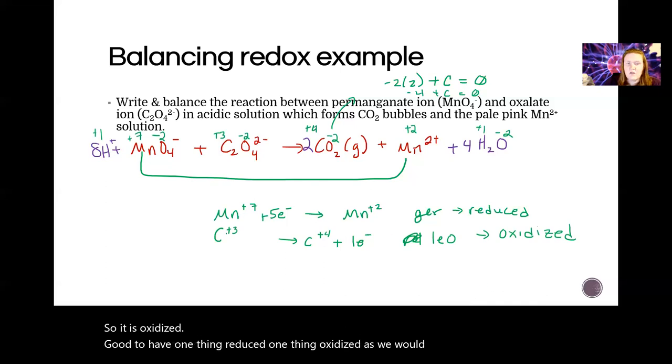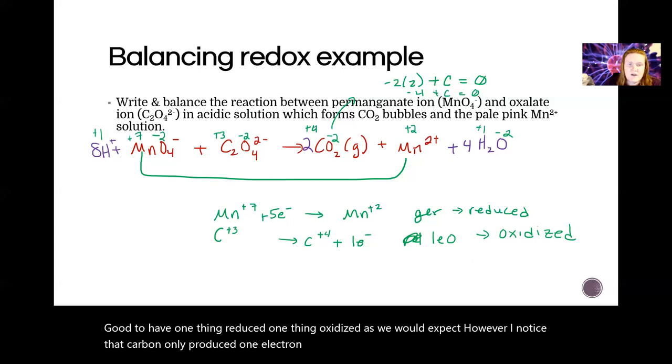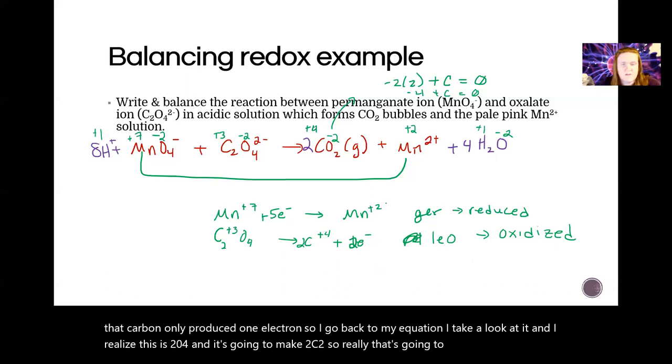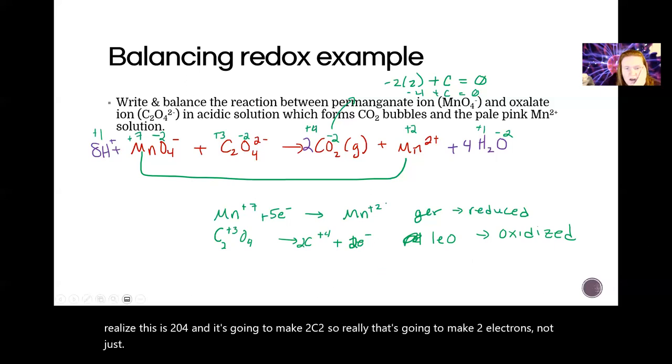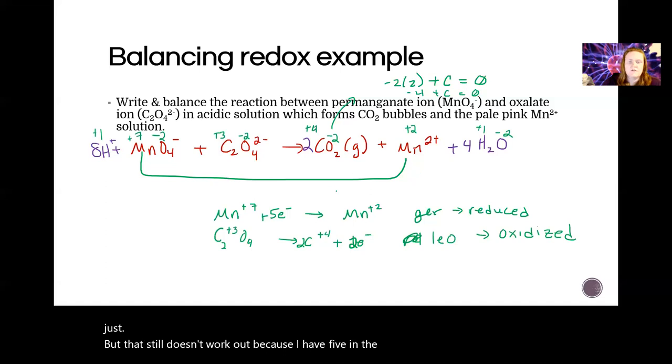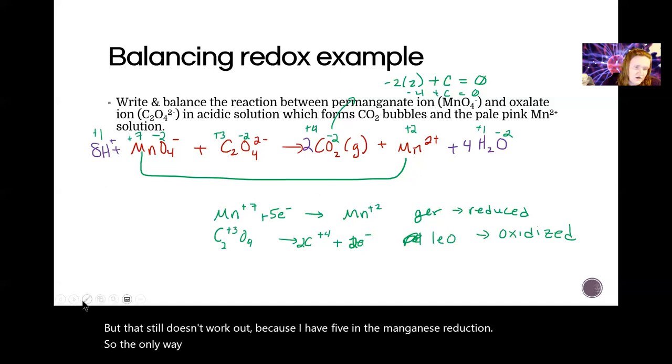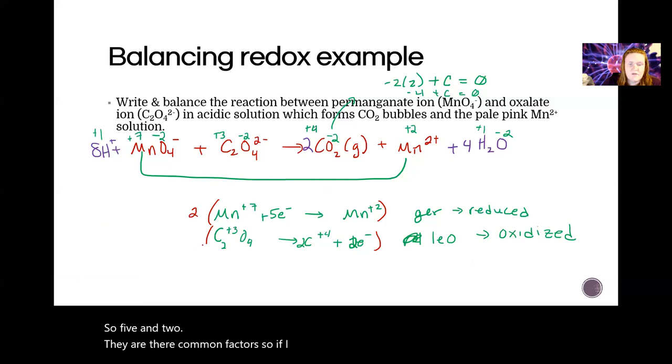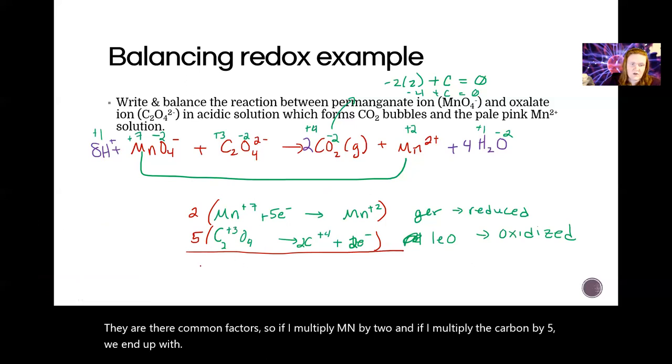So I go back to my equation, I take a look at it, and I realized, oh, this is actually C2O4, and it's going to make two CO2, so really that's going to make two electrons, not just one. But that still doesn't work out because I have five in the manganese reduction. So the only way to balance the charge here is to multiply by a common factor. So five and two—well, they are their common factors. So if I multiply Mn by two and if I multiply the carbon by five, we end up with 10 electrons being transferred all together.